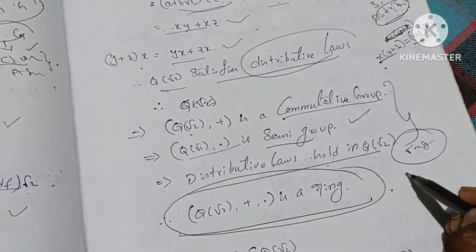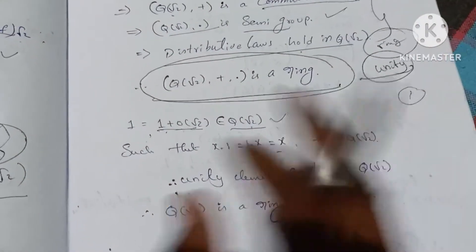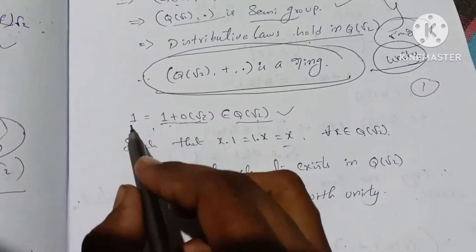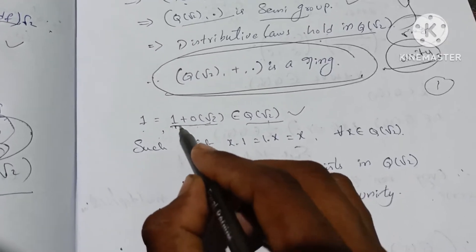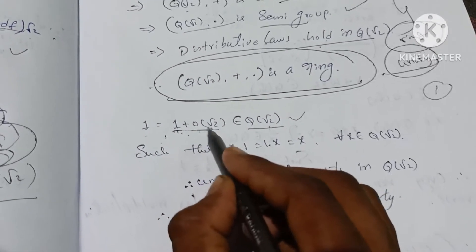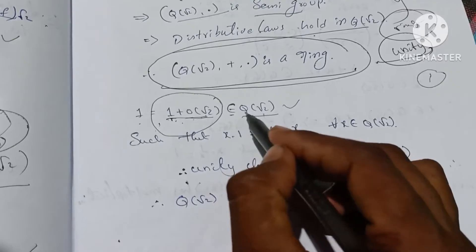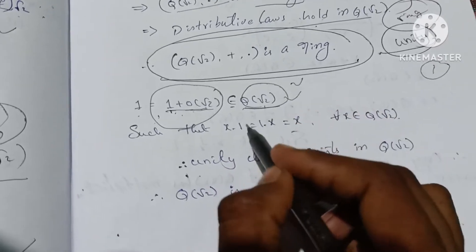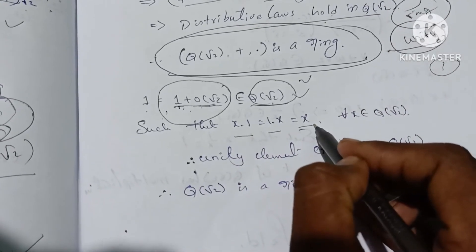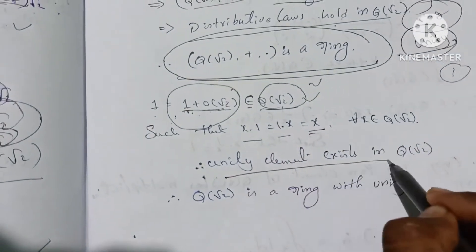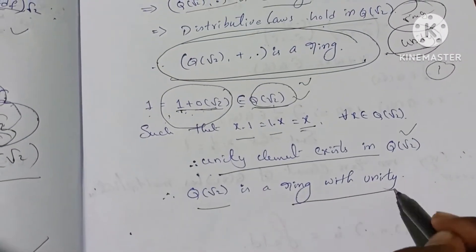Now, ring with unity. The unity element is 1 equals 1 plus 0 root 2, which is of the form a plus b root 2 and belongs to Q(√2), such that x times 1 equals 1 times x equals x. The unity element exists. Therefore Q(√2) is a ring with unity.